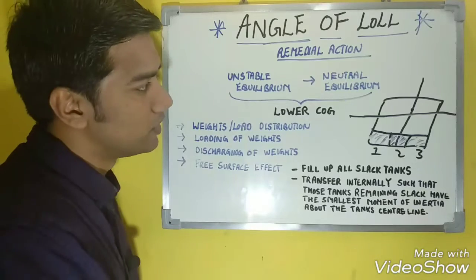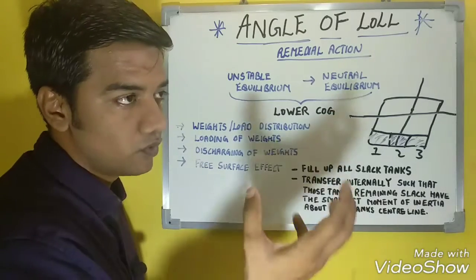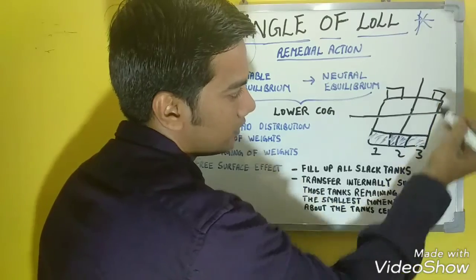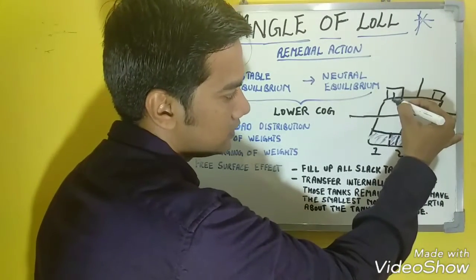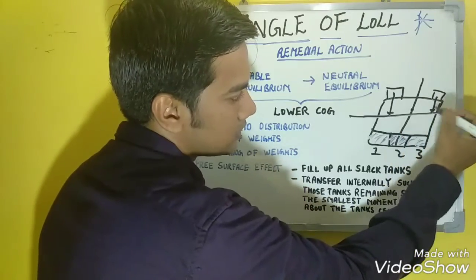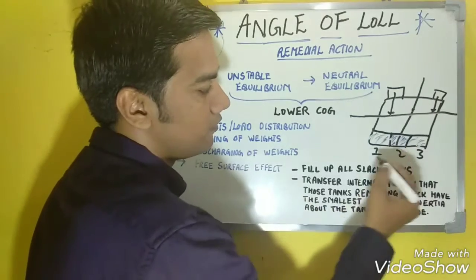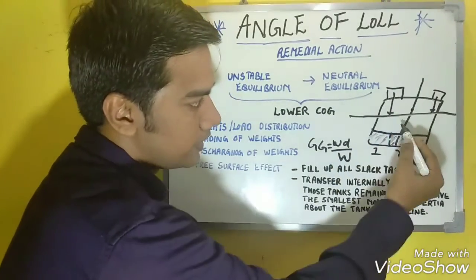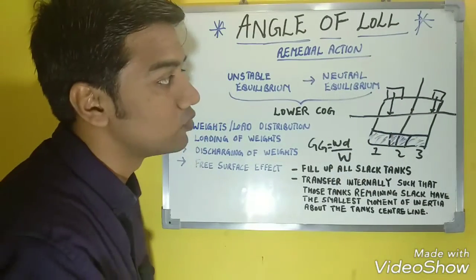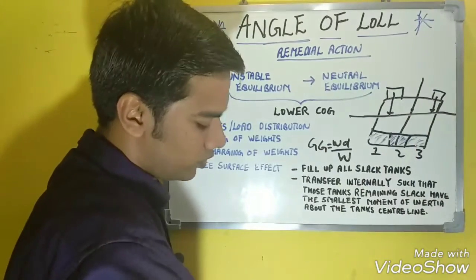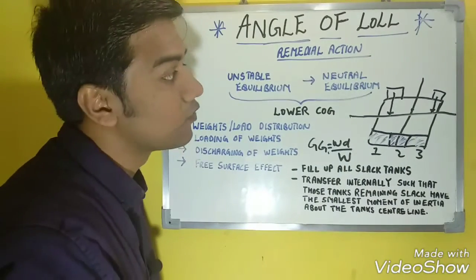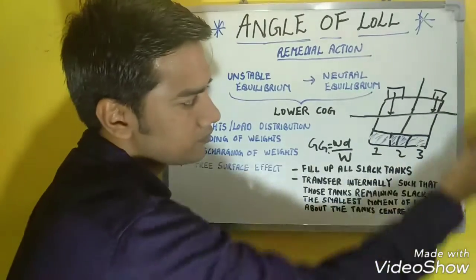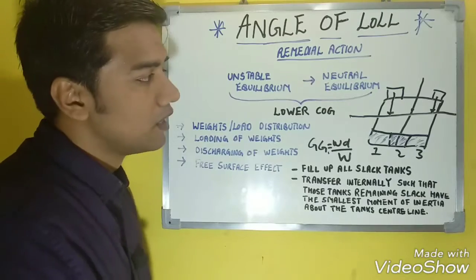When discharging weights to lower the center of gravity, discharge from the higher side first. Since the vessel is heeled, the vertical distance of the center of gravity on the higher side is greater compared to the lower side. Using the formula GG1 = wd/W, the shift of the center of gravity is greater when discharging from the higher side, so discharge cargo from the higher side first, then from the lower side.